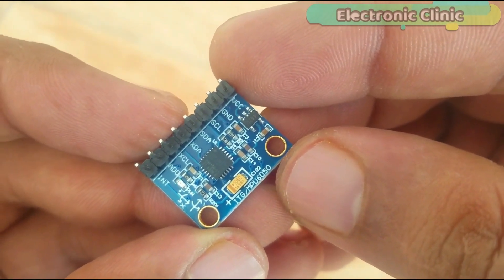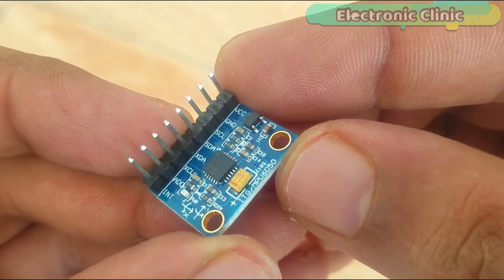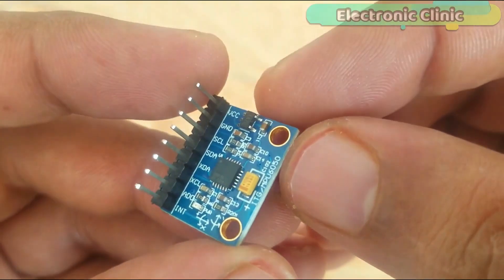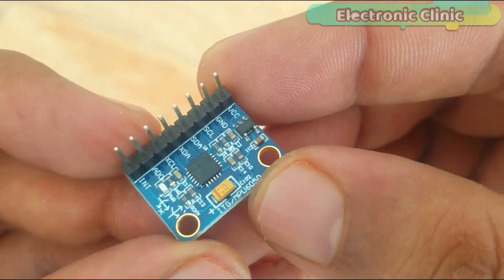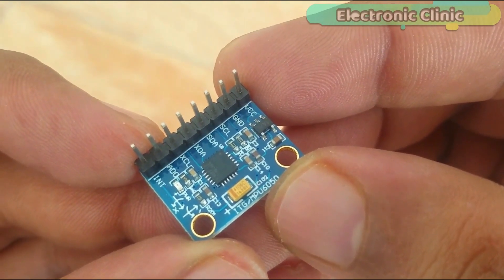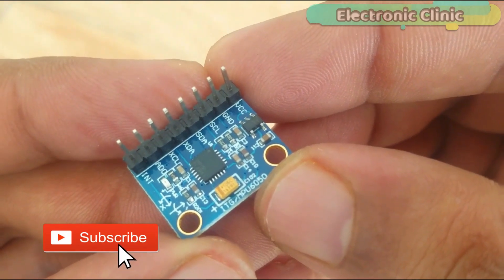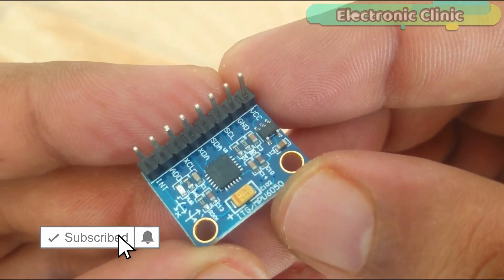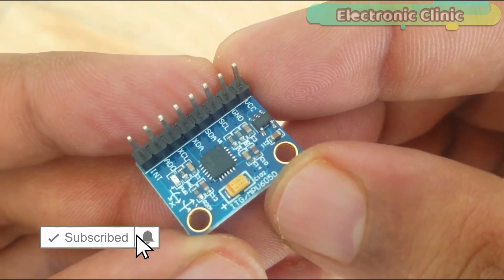The MPU6050 communicates with the Arduino through the I2C protocol. The MPU6050 always acts as a slave to the Arduino with the SDA and SCL pins connected to the I2C bus. This module needs 3 to 5 volts.